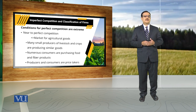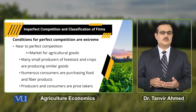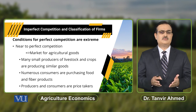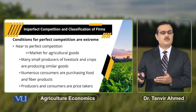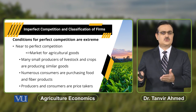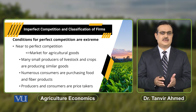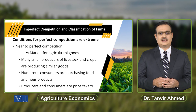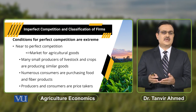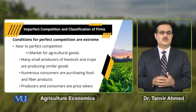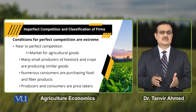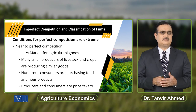When we talk about the agricultural goods market, there are small producers of livestock and crops producing similar goods. There are a large number of small producers producing livestock goods and crops. There are also numerous consumers purchasing food and fiber products. The producers and consumers in this market are price takers — they have no control over the price that prevails in the market.